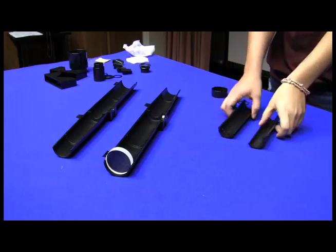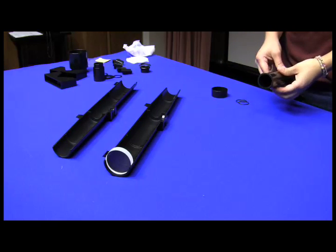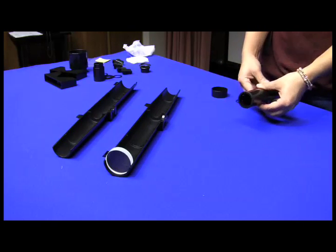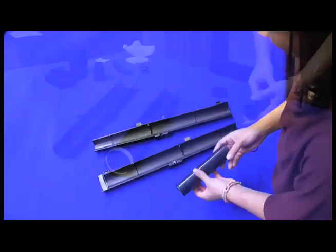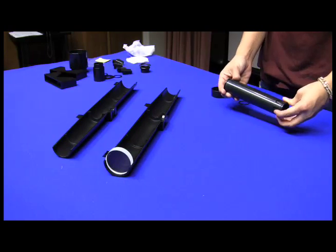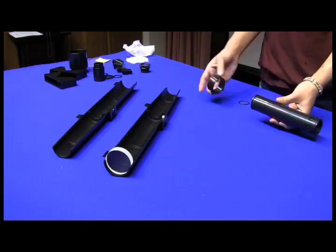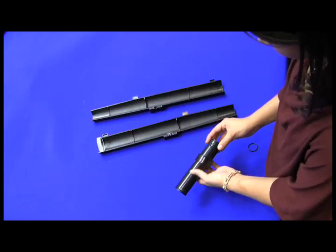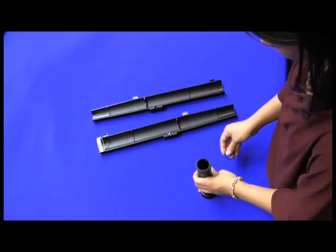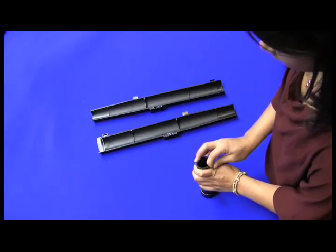Take the two halves of the focuser and put them together. Put the elastic ring over the end, then put the end cap over the focuser. This will help hold the telescope together. Then add the other elastic ring.